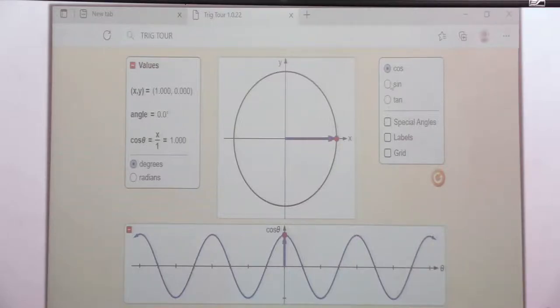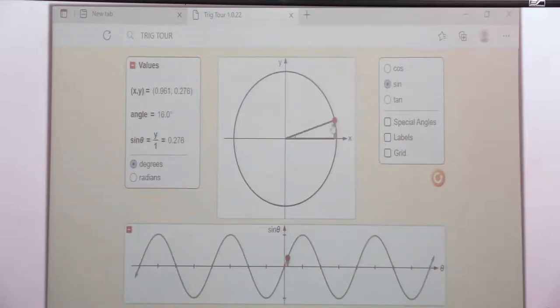Let us also consider the sine. For the sine, they are also positive in the first quadrant. They are positive in the second quadrant. They are negative in the third quadrant. Note that. They are also negative in the fourth quadrant.